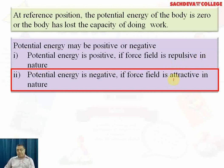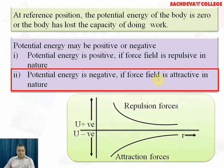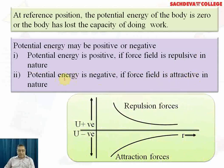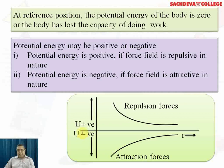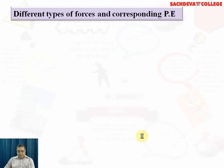Potential energy is negative if the force field is attractive in nature. A graph is shown with positive energy on the positive y-axis and negative energy on the negative y-axis, with repulsions and attractions indicated on the x-axis as r increases.